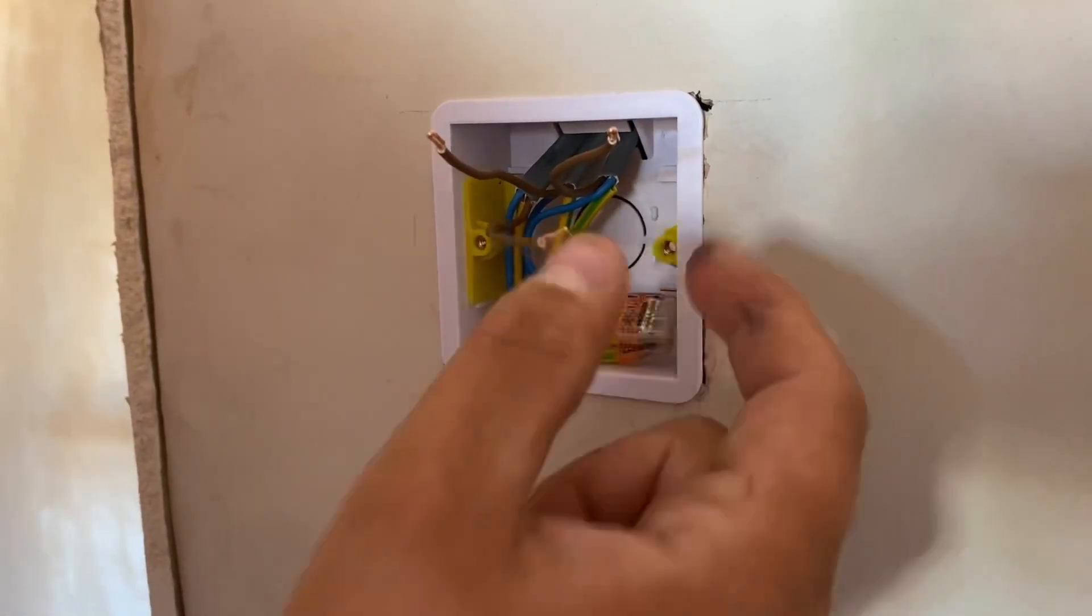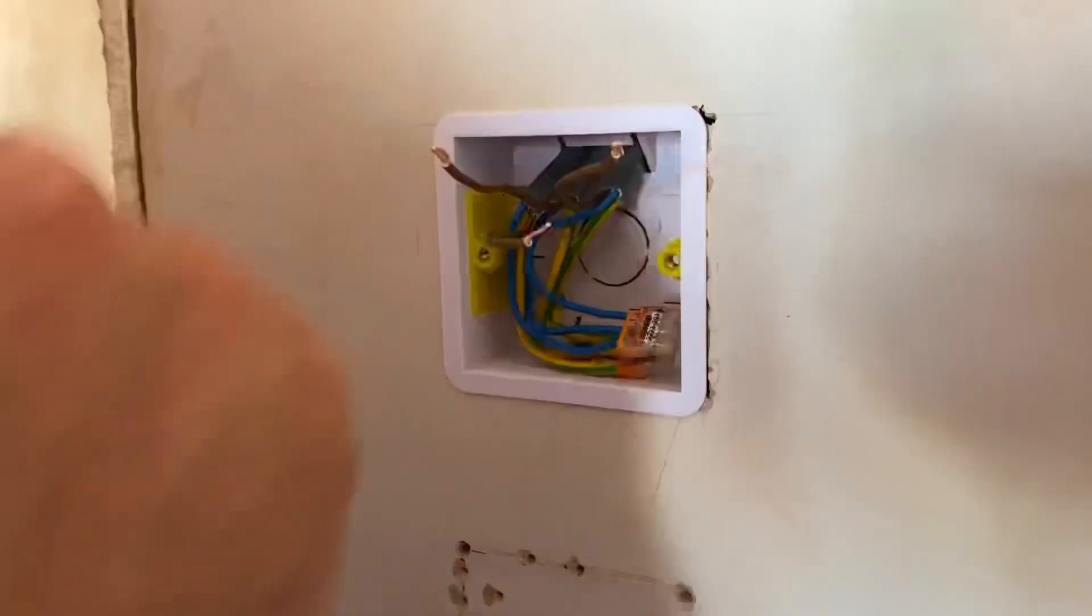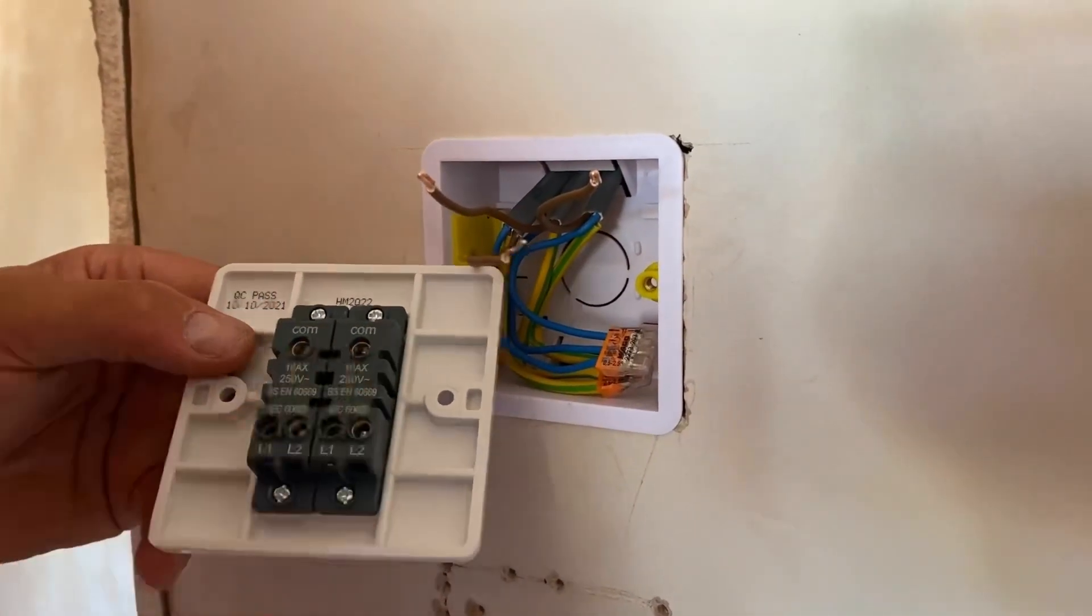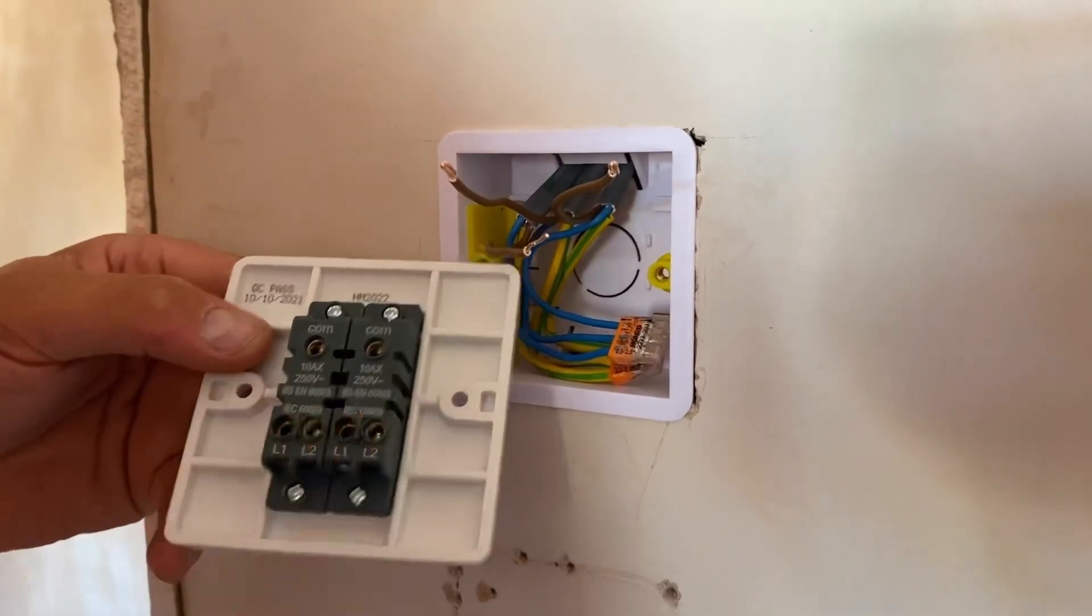We could then bring a cable from the Wago into the first common and another cable from the Wago into the second common to give us our permanent feed at the top of the switch.